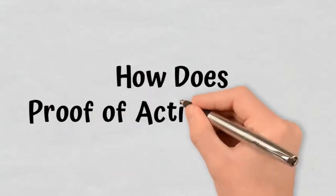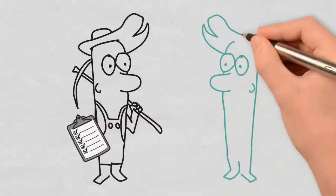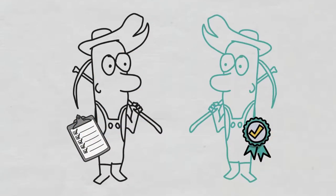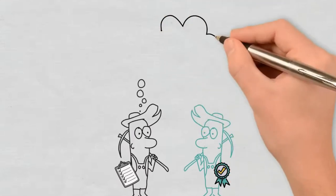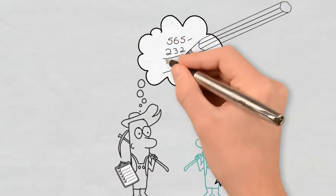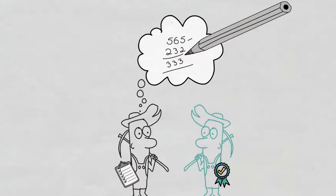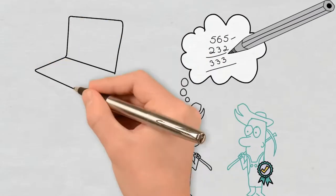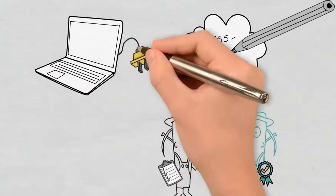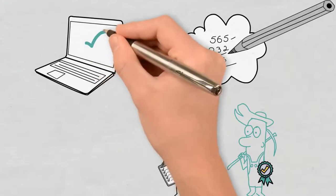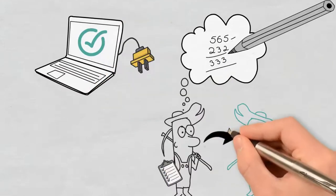How does Proof of Activity work? The Proof of Activity mining process is similar to that of a Proof of Work one. Miners in the blockchain are trying to solve a mathematical equation or mine a new block using more computing power. After the new block is mined, the system is directed into Proof of Stake.